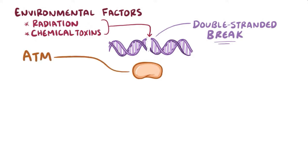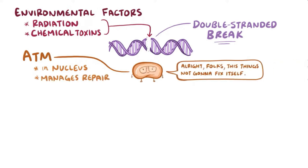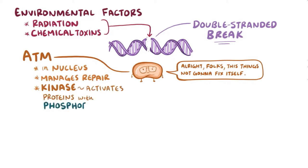ATM is primarily located in the cell's nucleus, and you can think of ATM as like a manager of the DNA's repair. It's a protein kinase, which means that it uses its supermanaging skills to activate other proteins through phosphorylation, which is the addition of a phosphoryl group, or PO3²⁻.